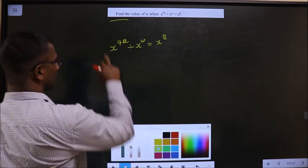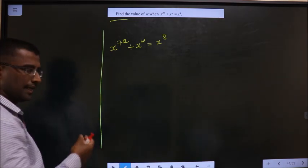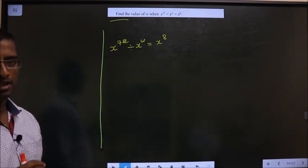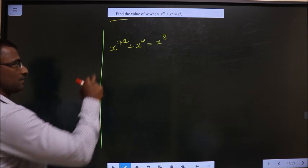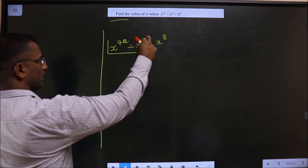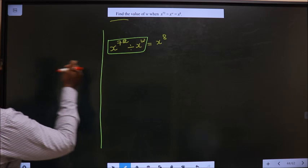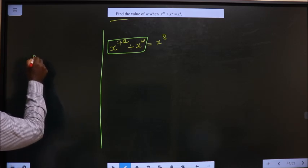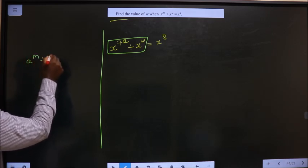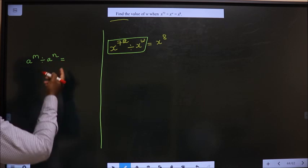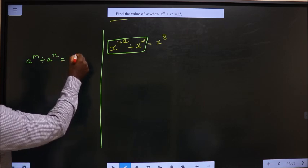Now, initially what formula will you apply? a^m divided by a^n is a^(m minus n).